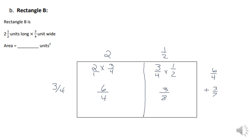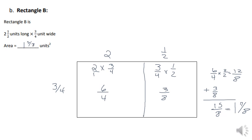Now I need to add six-fourths and three-eighths with a common denominator. I convert six-fourths to eighths by multiplying by two over two, which gives me twelve-eighths. So twelve-eighths plus three-eighths equals fifteen-eighths. Eight goes into fifteen once with seven left over, so the area is one and seven-eighths square units.